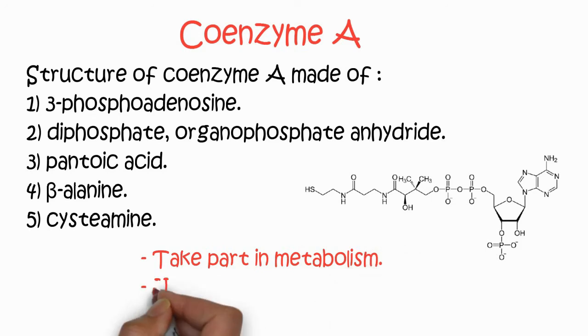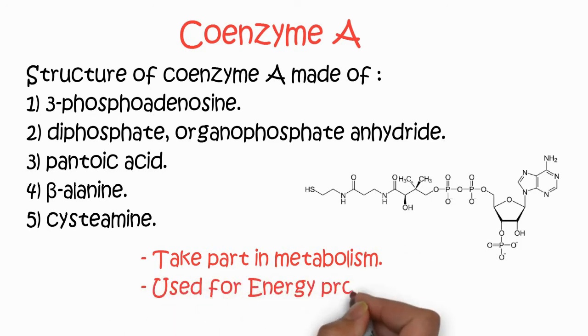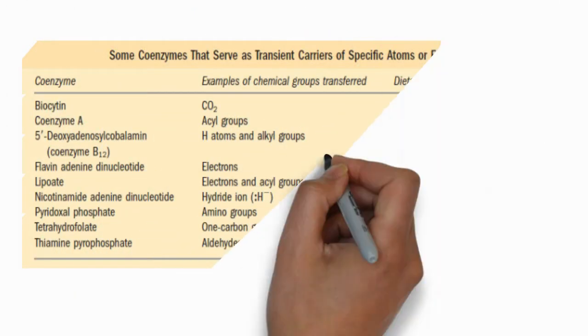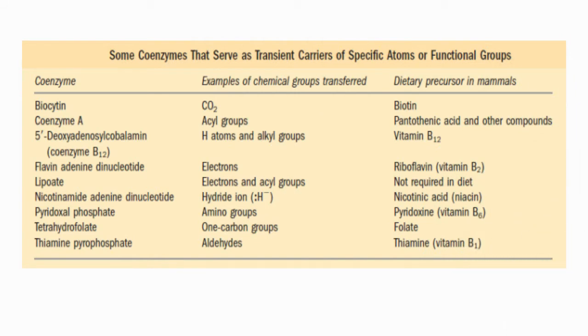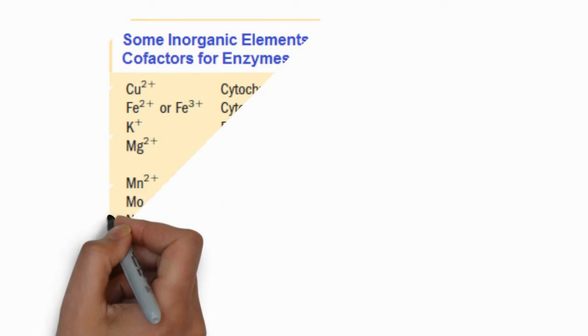This enzyme takes part in the metabolism of several metabolites. It is also used for energy production. In this table you can see some coenzymes. They are transient carriers of specific atoms or functional groups. For example, coenzyme biotin is used to carry out the carbon dioxide conversion, and the dietary precursor is biotin. Similarly, we have coenzyme A, 5-deoxy-adenosyl-cobalamin, or we call it coenzyme B12, and so on.